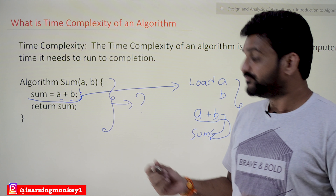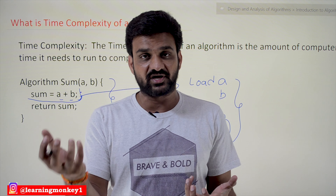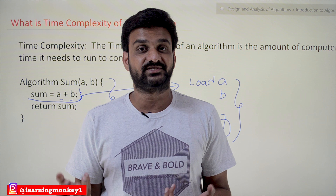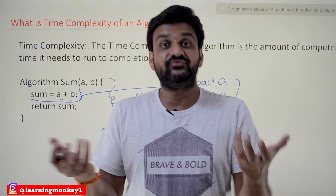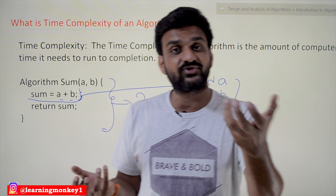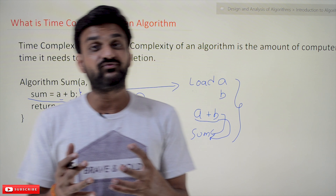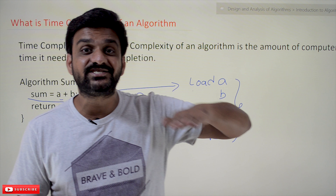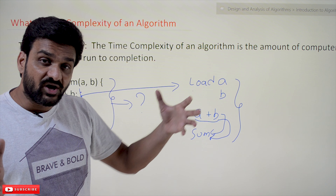Now, if you take two computers — for example, computer A is working at a clock speed of two gigahertz and computer B is working at a clock speed of four gigahertz — which one is going to work faster? The four gigahertz computer will work much faster. So there are different factors involved in determining the amount of time taken by each instruction to get executed.